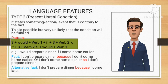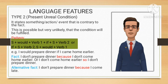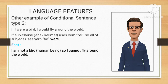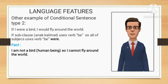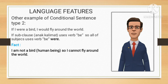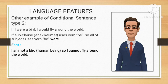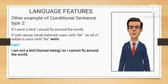Another way to express the fact: 'I don't prepare dinner because I come late.' Another example of conditional sentence type 2: 'If I were a bird, I would fly around the world.' When the sub-clause uses the verb 'be,' all subjects use 'were.' The fact from this sentence: I am not a bird — I am a human being — so I cannot fly around the world.